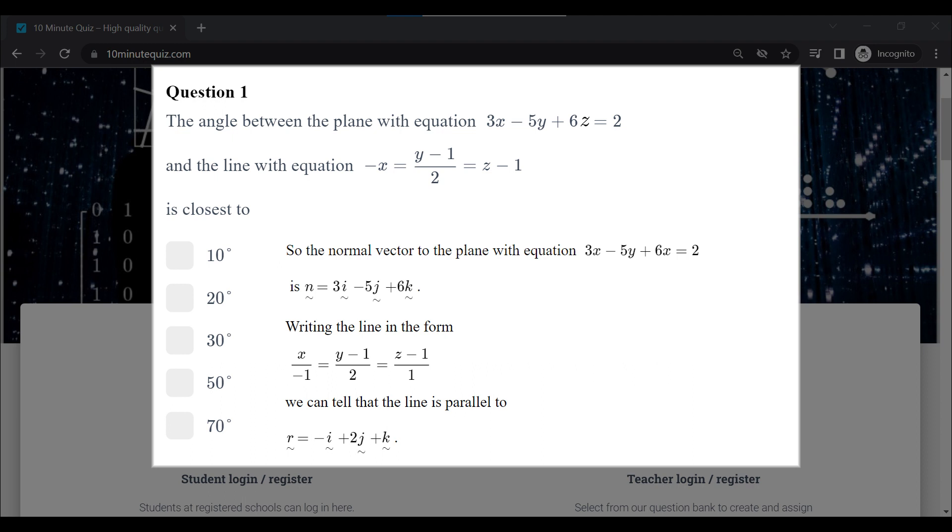Our line is given in Cartesian form. What we want to get is a vector that's parallel to that line. From this Cartesian form, if we write it as x over negative 1 equals y minus 1 over 2 equals z minus 1 over 1, these denominators here are going to give us a vector parallel to the line. In this case, the vector will be negative i plus 2j plus 1k.